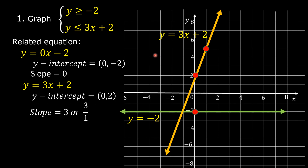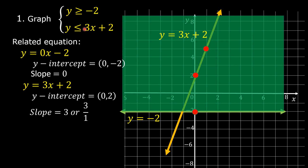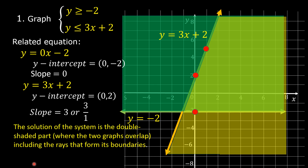Let us now do the shading. In the first linear inequality, the symbol is greater than or equal to, so we are going to shade above the line of y is equal to negative 2. The symbol of inequality in the second linear inequality is less than or equal to, so we are going to shade below the line of y is equal to 3x plus 2. The solution of the system is the double-shaded part — this part where the two graphs overlap, including this ray and this ray that form its boundaries.